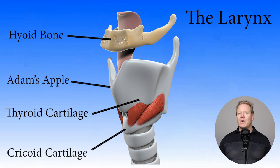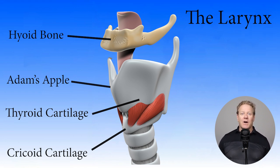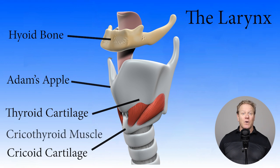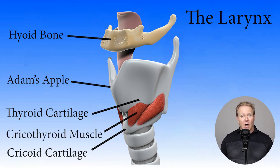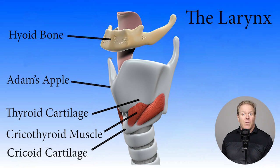The cricoid cartilage and the thyroid cartilage are connected by the cricothyroid muscle, which when contracted lowers and tilts the thyroid cartilage forward, stretching and thinning the vocal cords.